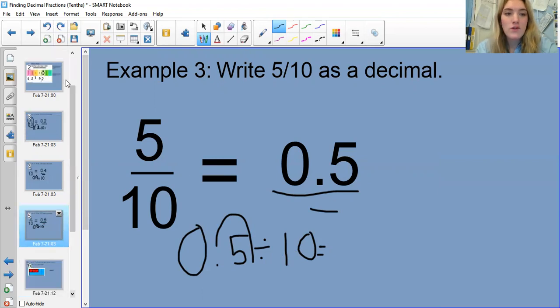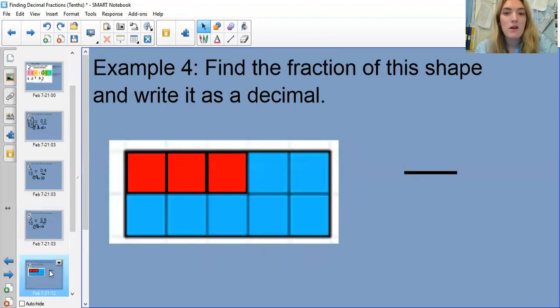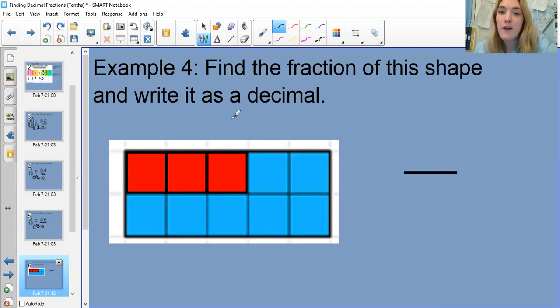Those are some examples that are going to come up in your activity sheet today, but a couple other examples that will come up are shapes. What you need to do when you see a question like this is first find the fraction of this shape and then write it as a decimal.